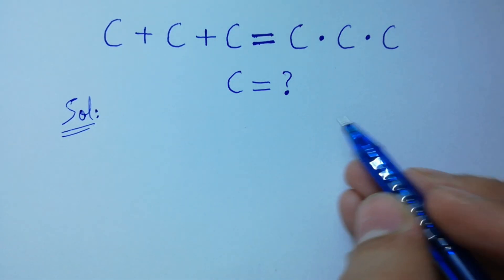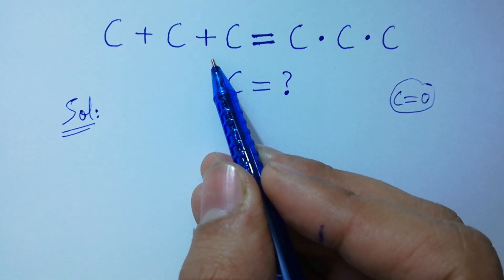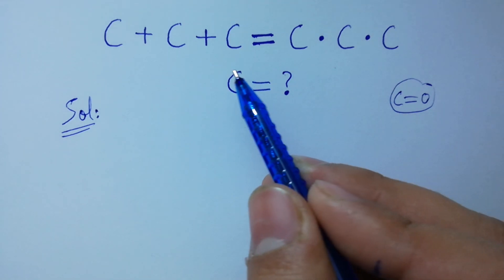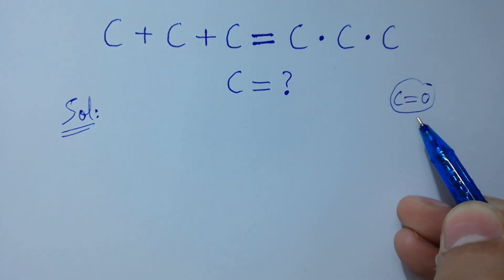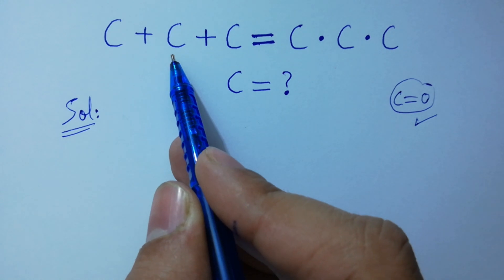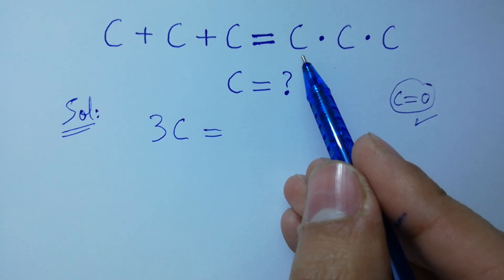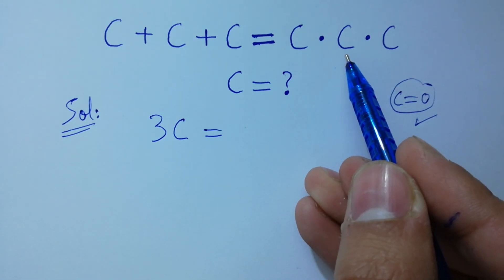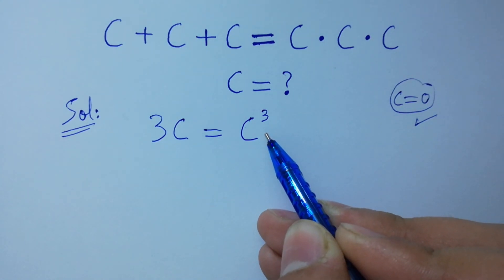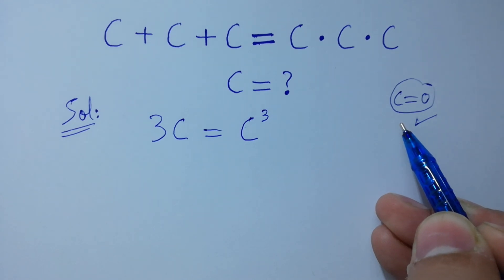If we put c equal to 0, you can see 0 plus 0 plus 0 which is 0, and on the right hand side 0 times 0 times 0 which is 0. So 0 is equal to 0, which shows that c equal to 0 is one solution. But c plus c plus c on the left hand side is 3c, and on the right hand side c times c times c gives us c cubed. Since this has power 3, it has three solutions — one solution is c equal to 0, and there are two more solutions to find.